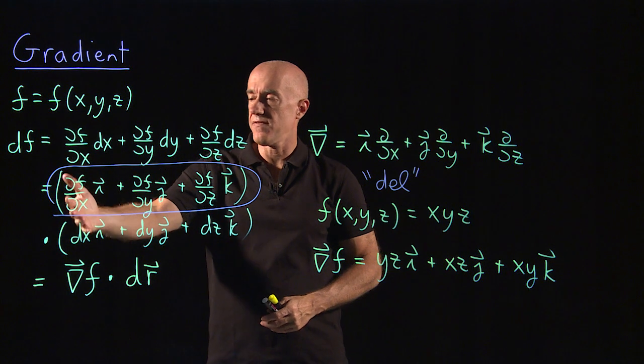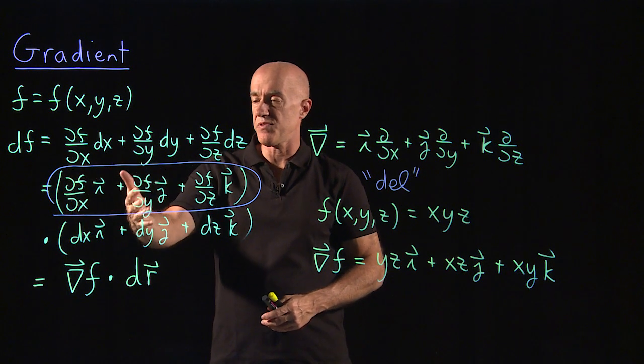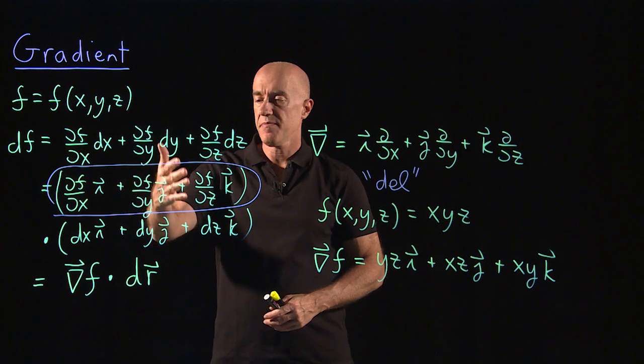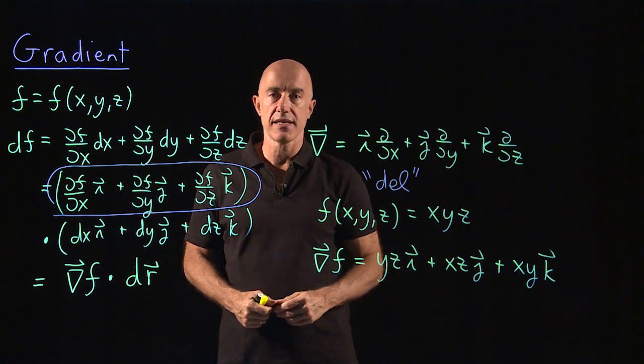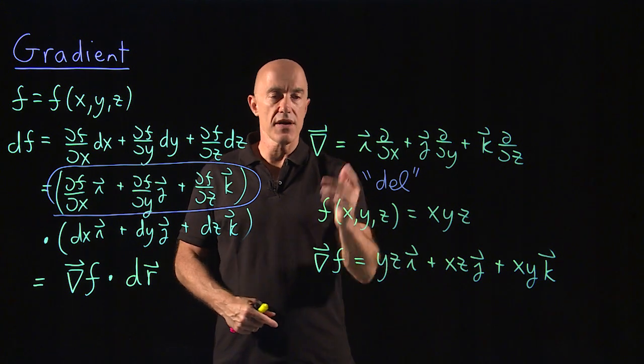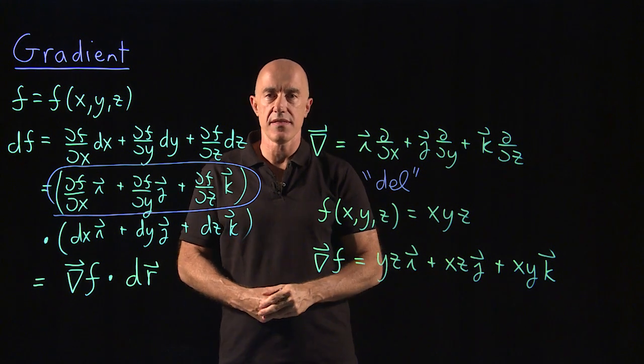Then you get ∂f/∂x times i plus ∂f/∂y times j, plus ∂f/∂z times k. And then I worked an example. We'll be seeing a lot more of the del operator in this course.